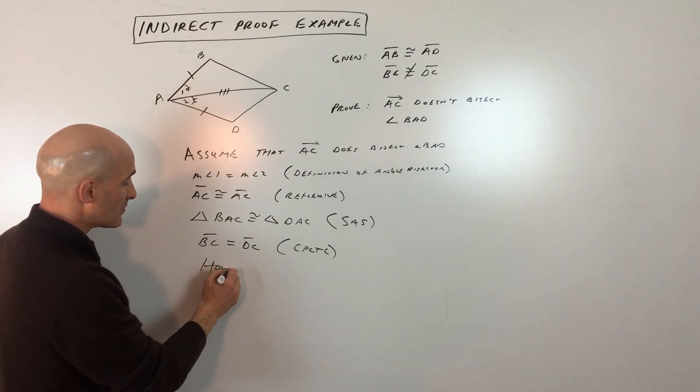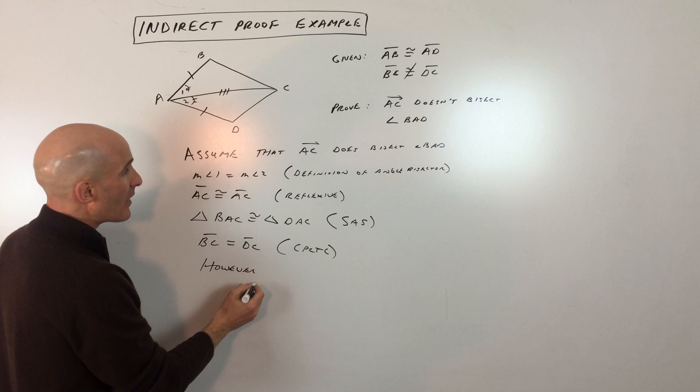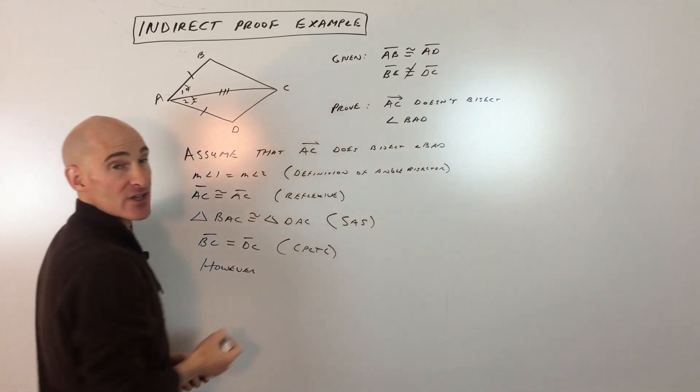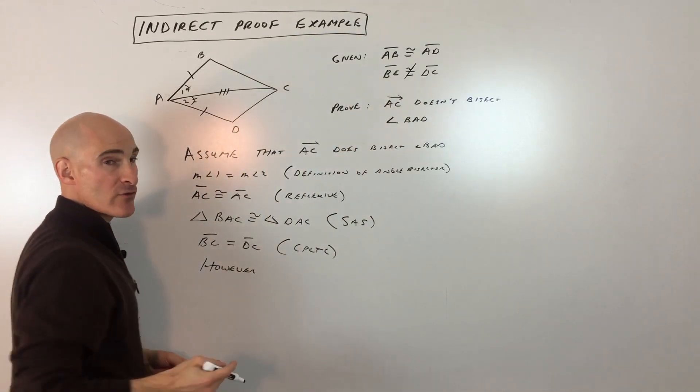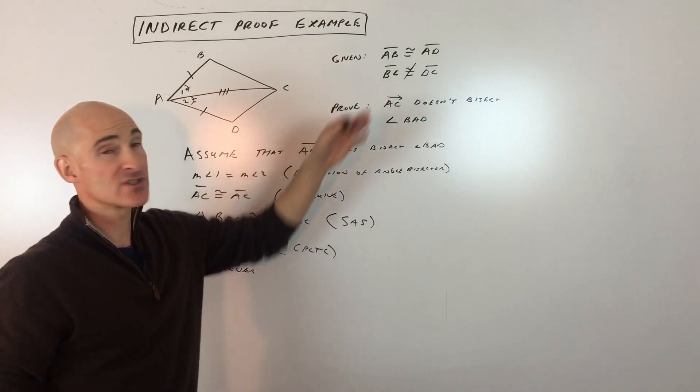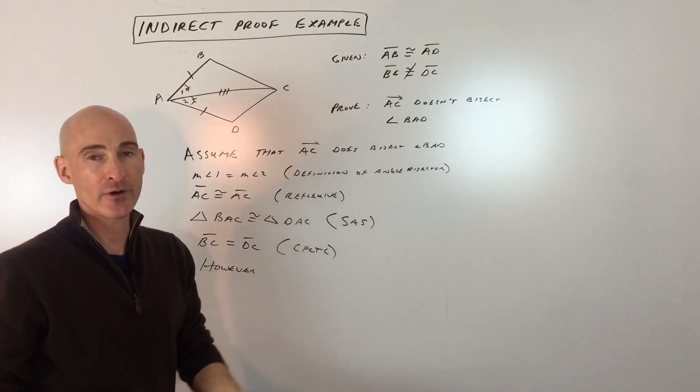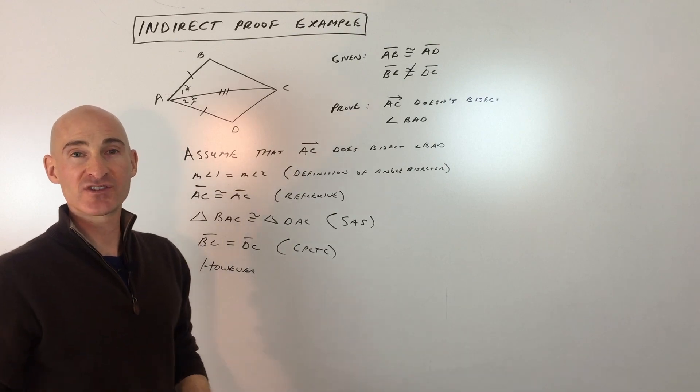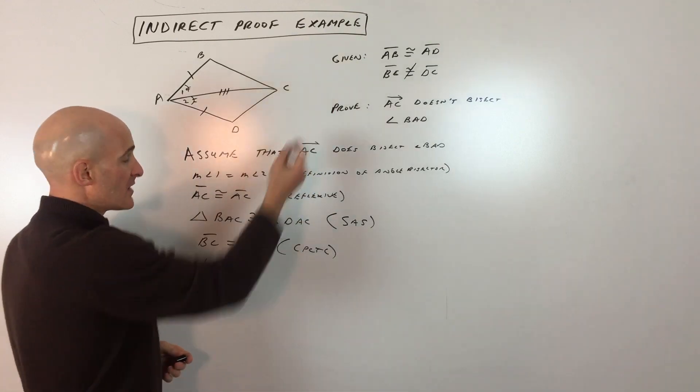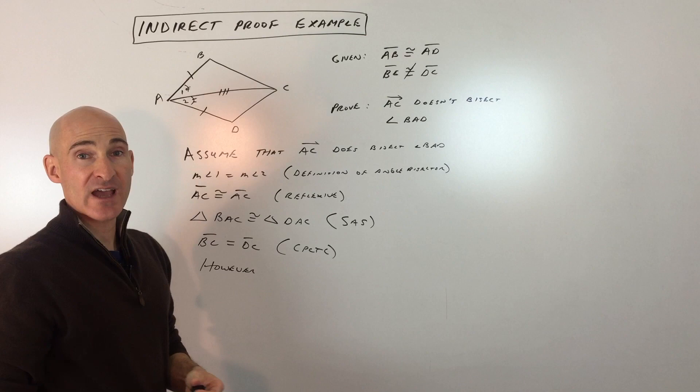However, what do we notice here? This is a contradiction of one of the givens. Whenever you get a contradiction of a given or something you know is true—like all angles in a triangle add up to 180, or parallel lines don't intersect—then you've reached a contradiction.